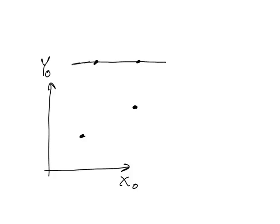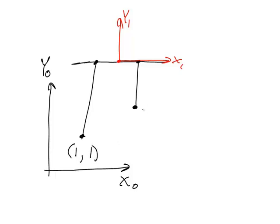I then also need to draw in my frame one on the platform. Let's suppose that the first joint is connected to the base frame at x equals 1, y equals 1. And let's suppose that the second joint is connected to the base at x equals 3, y equals 2.